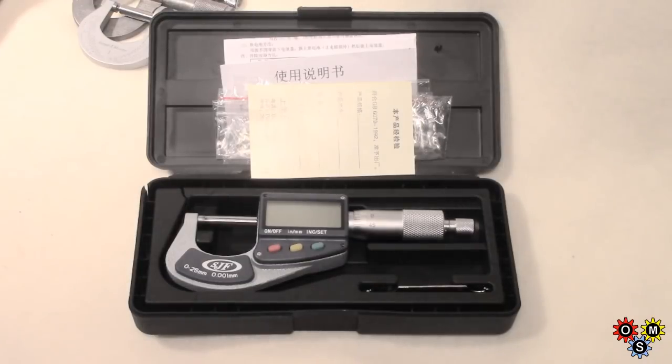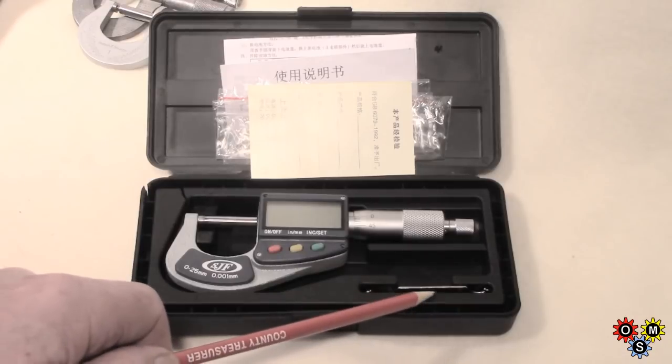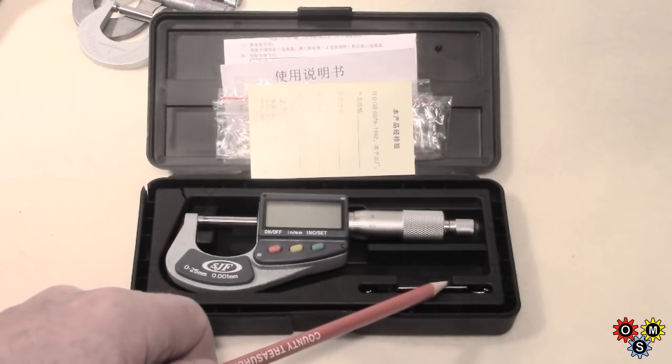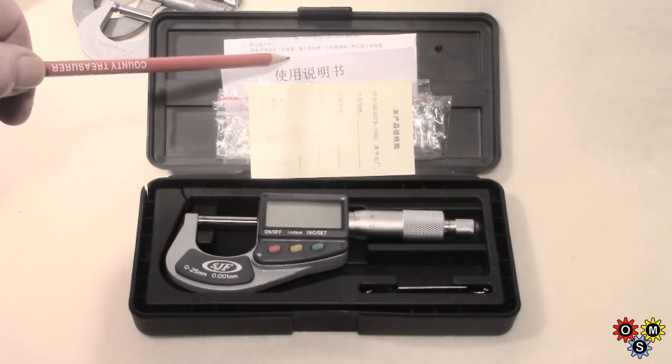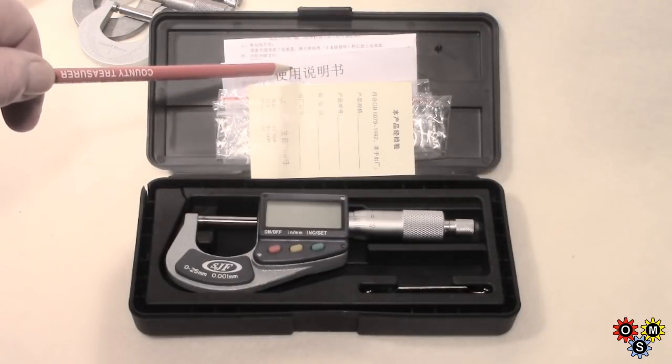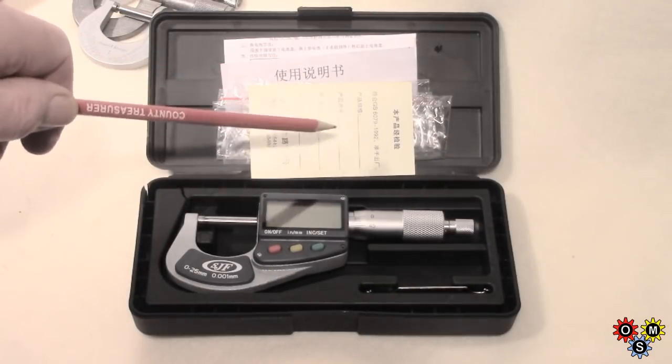So opening the box up, here's what we get. We've got the mic and a little adjustable adjusting wrench. Instructions such as they are in Chinese doesn't help a lot, so we'll go by a sort of common sense approach.